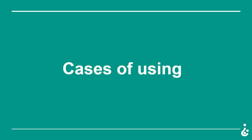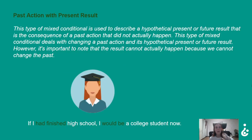Now let's look at some cases of using. First: past action with present result. This type of mixed conditional is used to describe a hypothetical present or future result — that is, the consequence of a past action that did not actually happen. It deals with changing a past action and its hypothetical present or future result. However, it's important to note that the result cannot actually happen, because we cannot change the past. For example: 'If I had finished high school, I would be a college student now.'